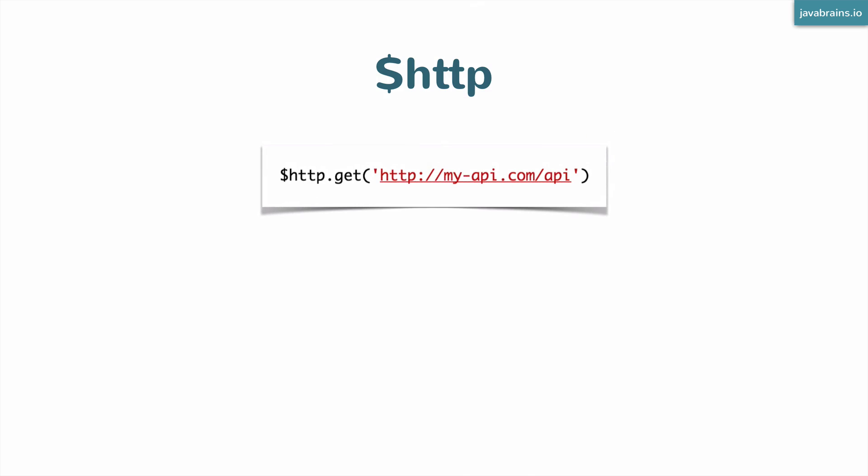Let's take the example of making a GET request. You have an endpoint, which is a JSON endpoint, and you need to make a GET request. How do you do that with $http? It's very simple. All you need to do is say $http.get, and it's going to accept an argument which is your URL. If you pass that in, the $http service is going to make a GET request to that URL. It's as simple as that.